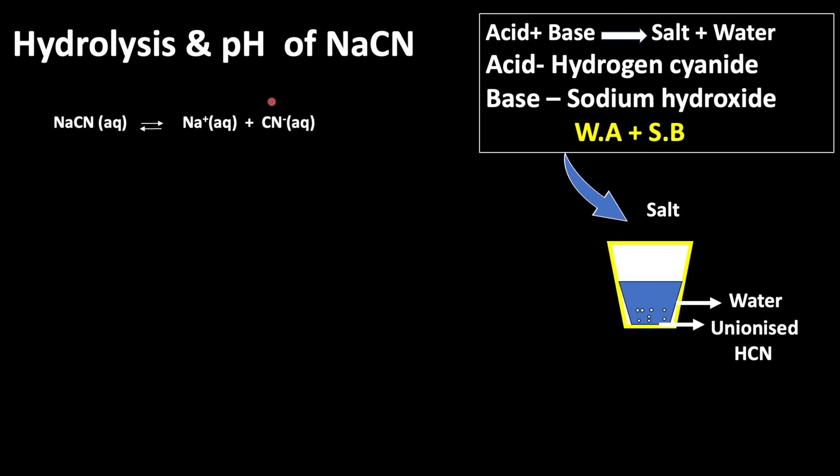But what happens to this CN- ion? This CN- ion is formed from hydrogen cyanide which is a weak acid. So because of that it undergoes hydrolysis. That means it will interact with water molecule.